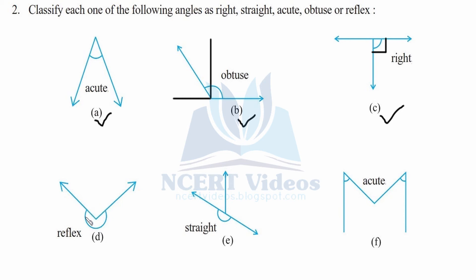Part d is a reflex angle. A reflex angle is more than a straight angle. If we construct a straight angle here using the two rays shown, this is your straight angle — but the angle shown is more than that, so it is a reflex angle.